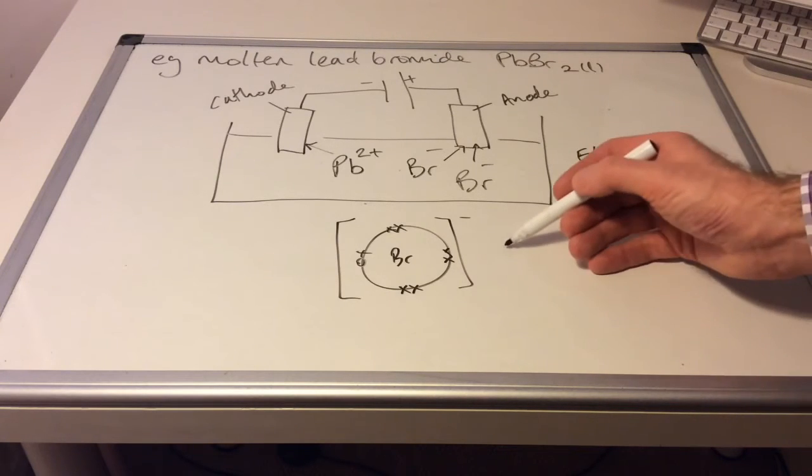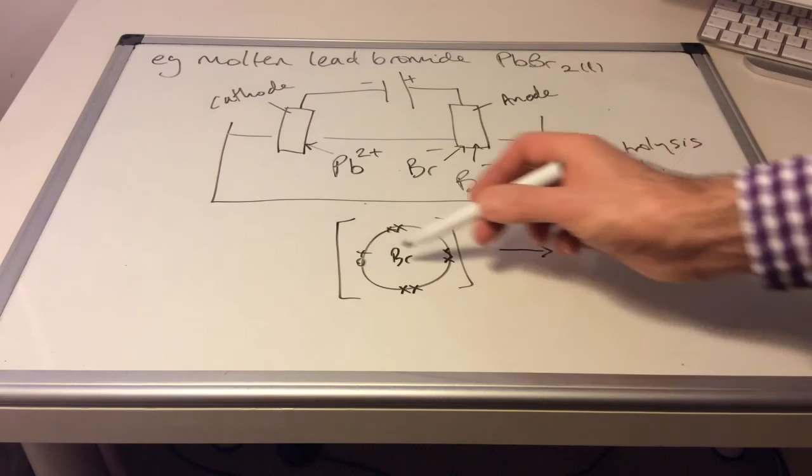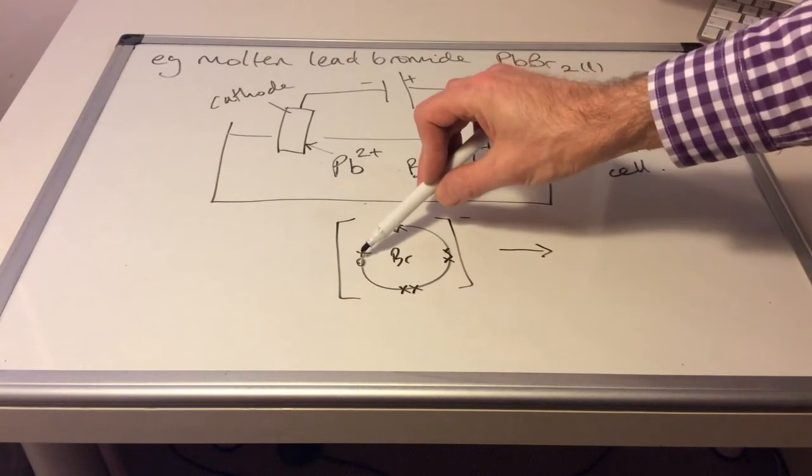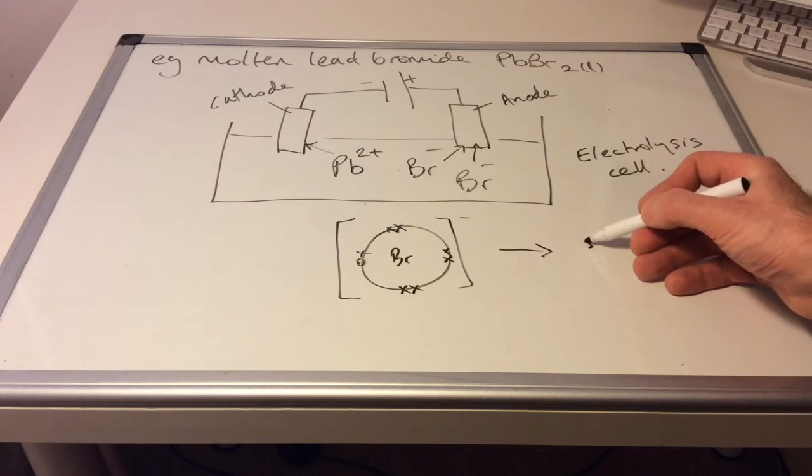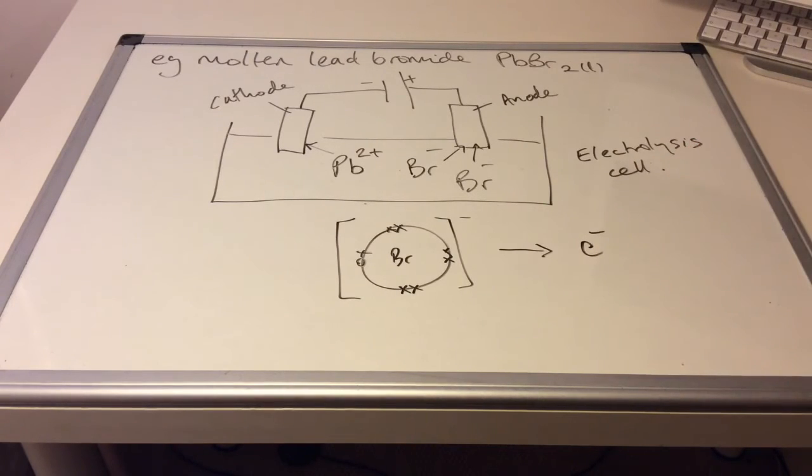Well, what happens is the bromide ion gives up that electron. So what are we going to make from that? Well, there's the electron that's being given up. And of course, what's left is a bromine atom.